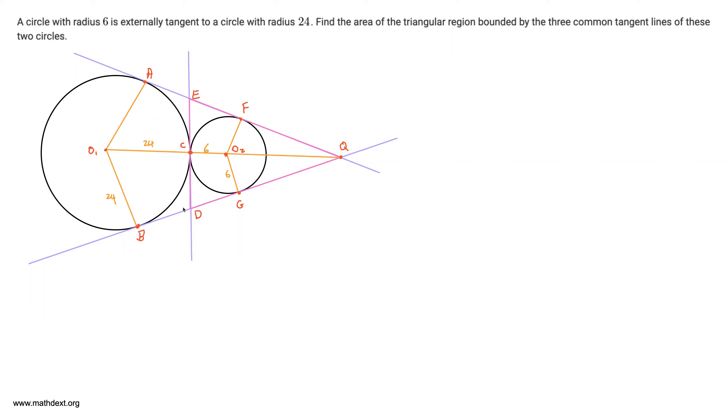We want to find the area of triangle QED. So first of all, I'm going to claim that this angle over here is a right angle, and the reason is because this bigger circle is tangent to this line, so O1C is perpendicular to the tangent line, and similarly O2C is perpendicular to this line, because this smaller circle is tangent to this line as well at the same point.